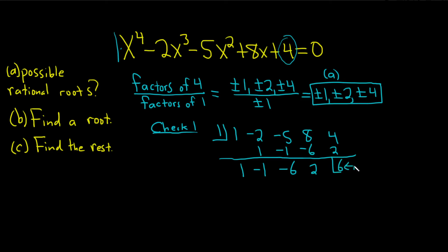That's not good — we want to get 0. The remainder is 6, so x=1 is not a root. We need to try a different number.